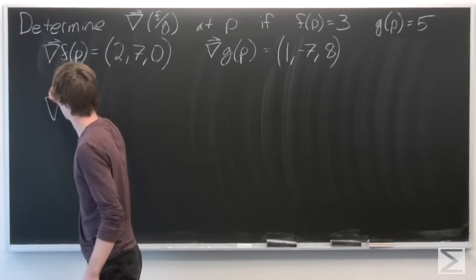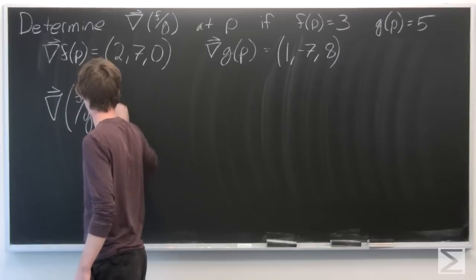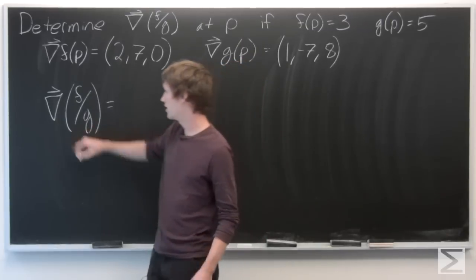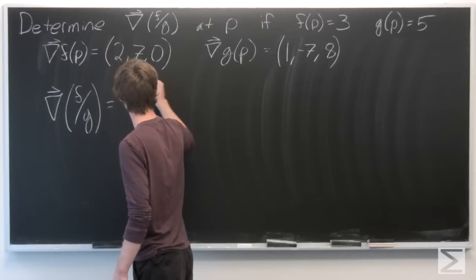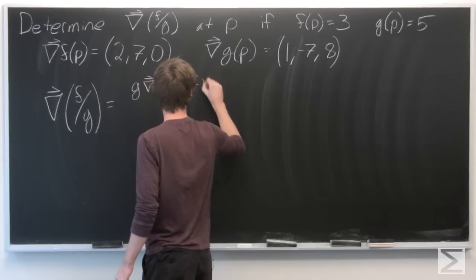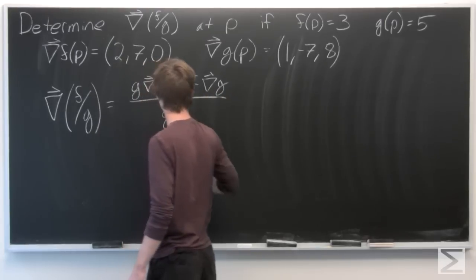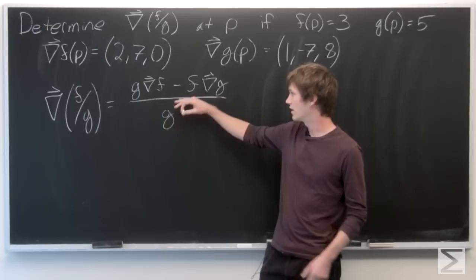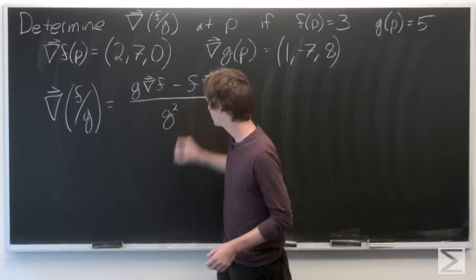So first, we know that by the quotient rule, the gradient vector of f over g is equal to g times the gradient vector of f minus f times the gradient vector of g over g squared.